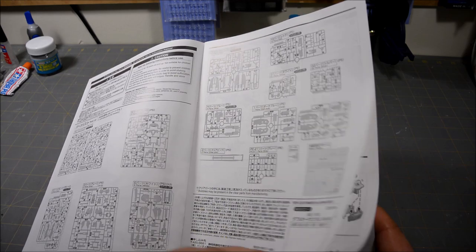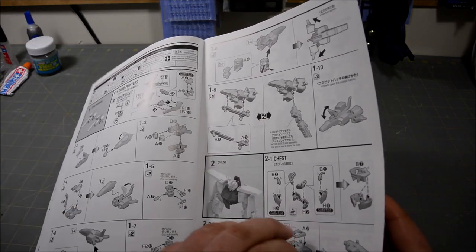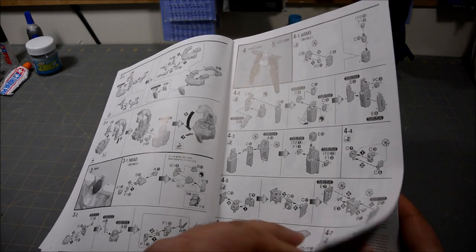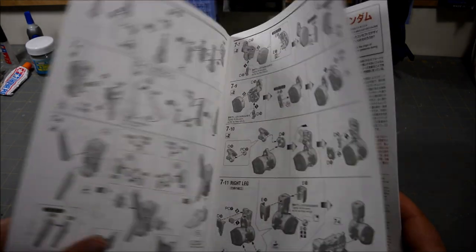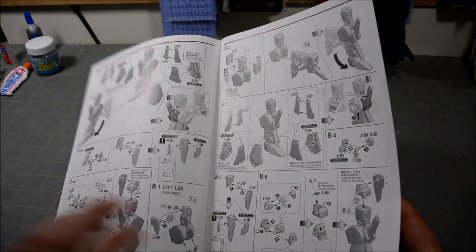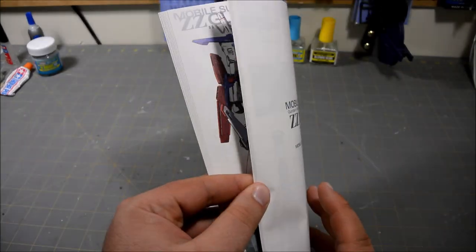So parts layout. They start us off building the core fighter, and then we move on to the torso and the head and the arms, little wings, feet, legs.